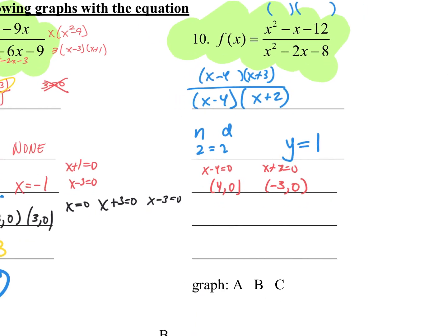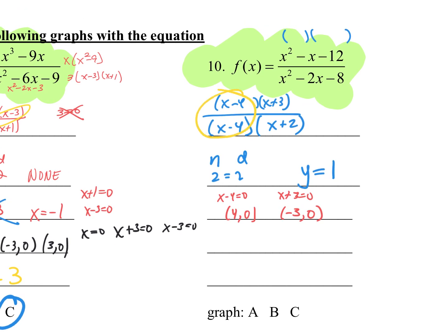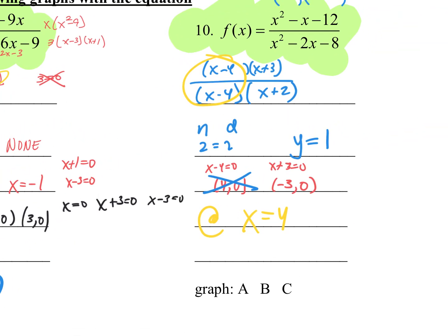For horizontal asymptote: degrees are both 2, so y equals the leading coefficient of numerator over denominator — y equals 1. For the roots, set numerator equal to zero: x minus 4 equals zero and x plus 3 equals zero, giving roots at (4, 0) and (negative 3, 0). But there's a hole at x equals 4, so there can't be a root and a hole in the same spot — that root doesn't exist. The vertical asymptote is only at x equals negative 2, not at x equals 4, because there's a hole there.